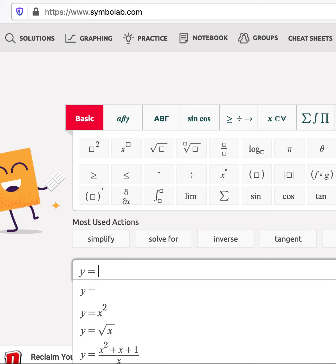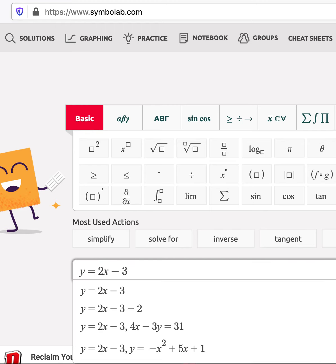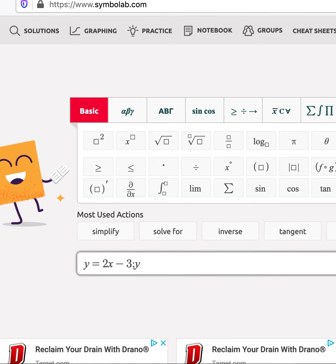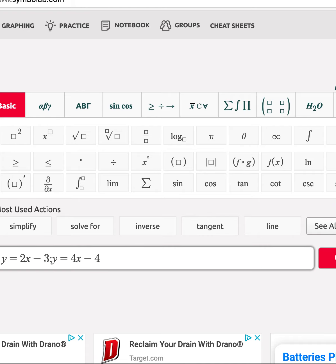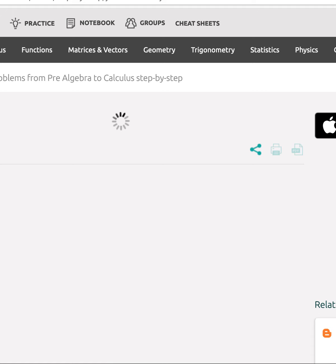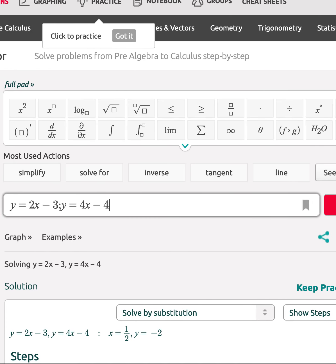First you have to type in one of the equations, then put a semicolon, then you can type in the other equation. Now just hit go on the right here, and as you can see it solves the system for you.